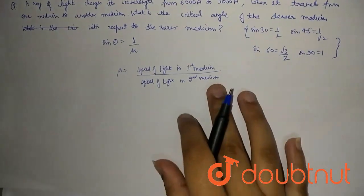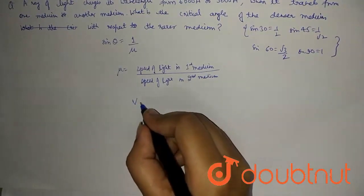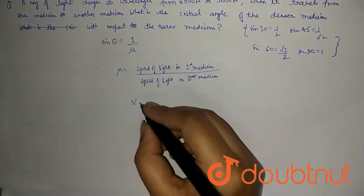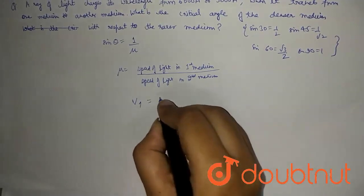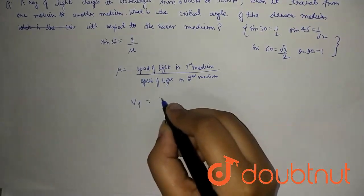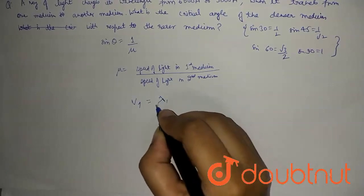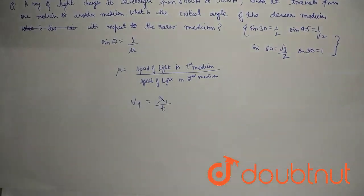What is the formula of speed? Speed of light in first medium is v₁ which is λ₁ / t, so speed is directly proportional to wavelength.